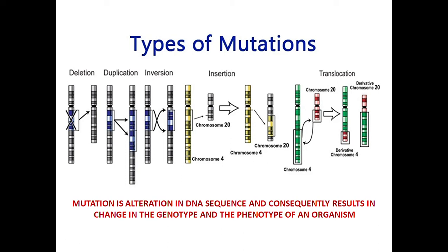So, we will talk about many challenges. If you know the DNA structure, the mutation topic is very useful. Chromosomal aberration means changes — chromosomal abnormalities. So, chromosomal mutation is related to cancer.